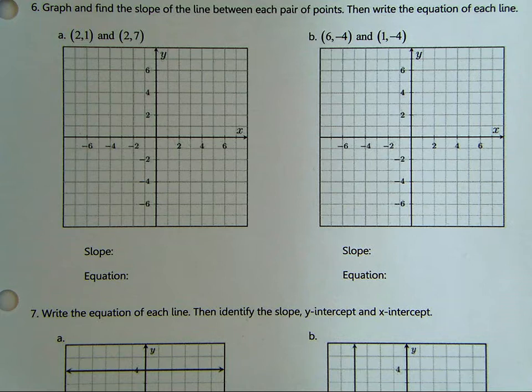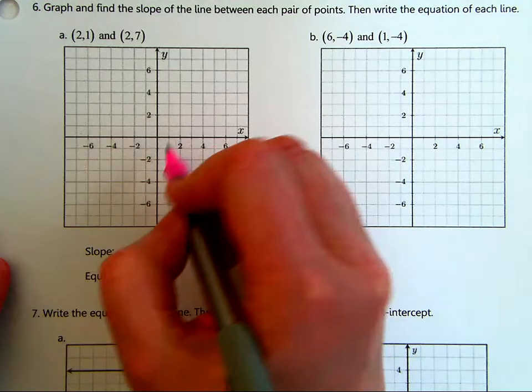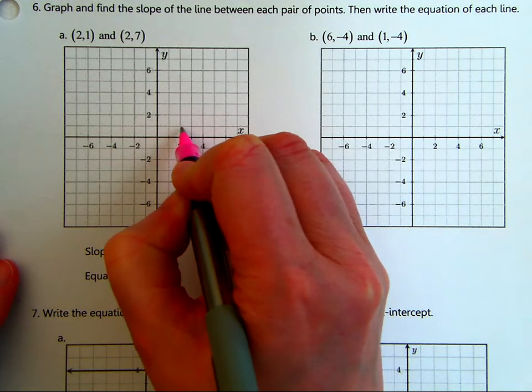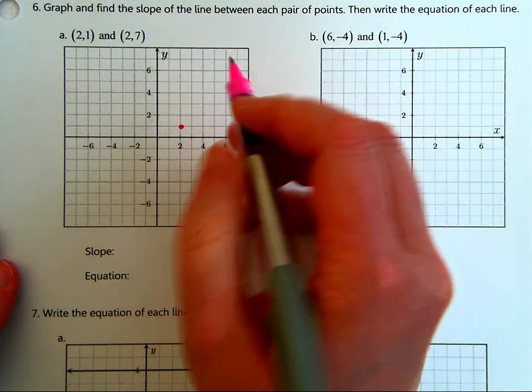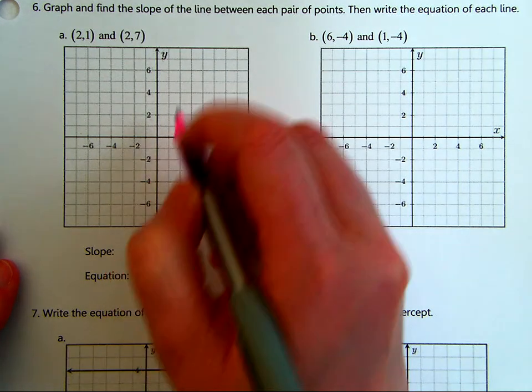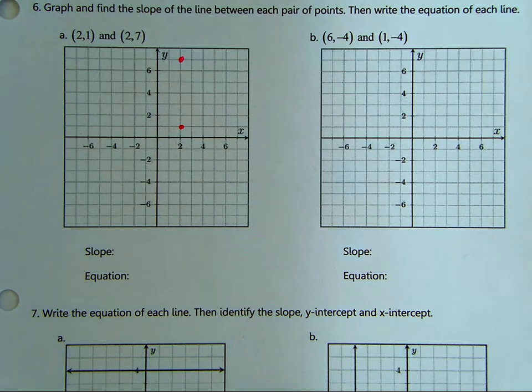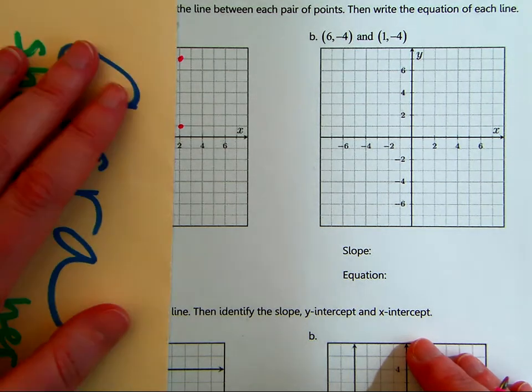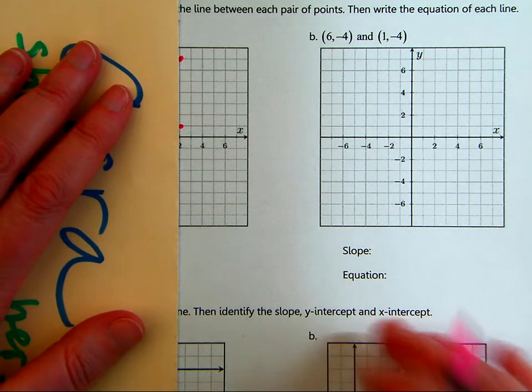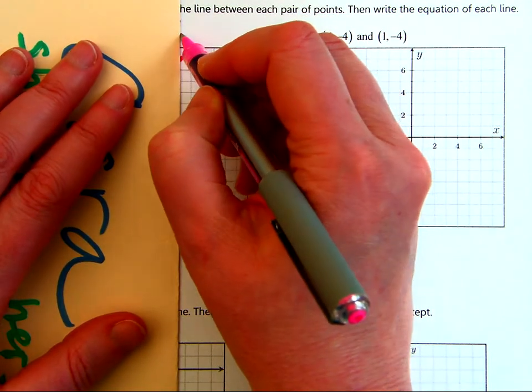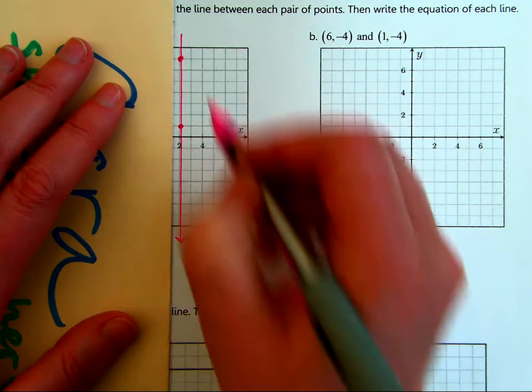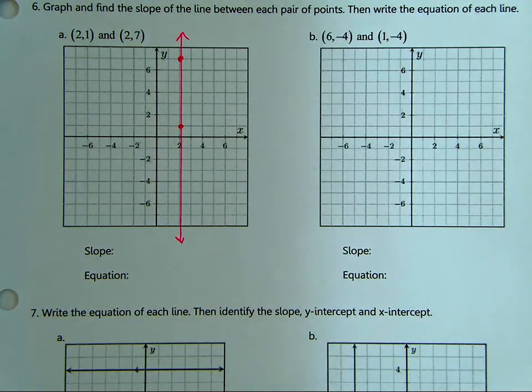Let's graph these. So let's graph (2,1) and (2,7). 2,1 and 2,7. So because that x is the same, it comes out vertically, doesn't it? So that's a vertical line.